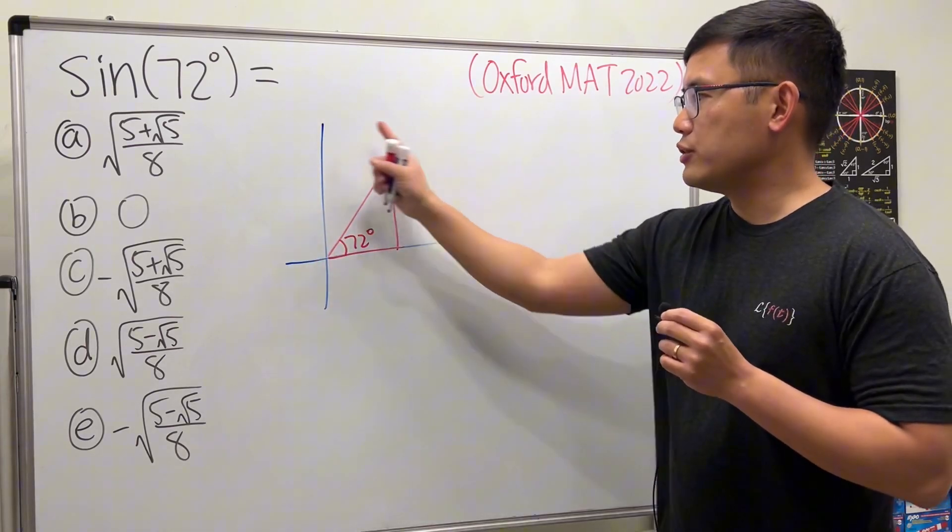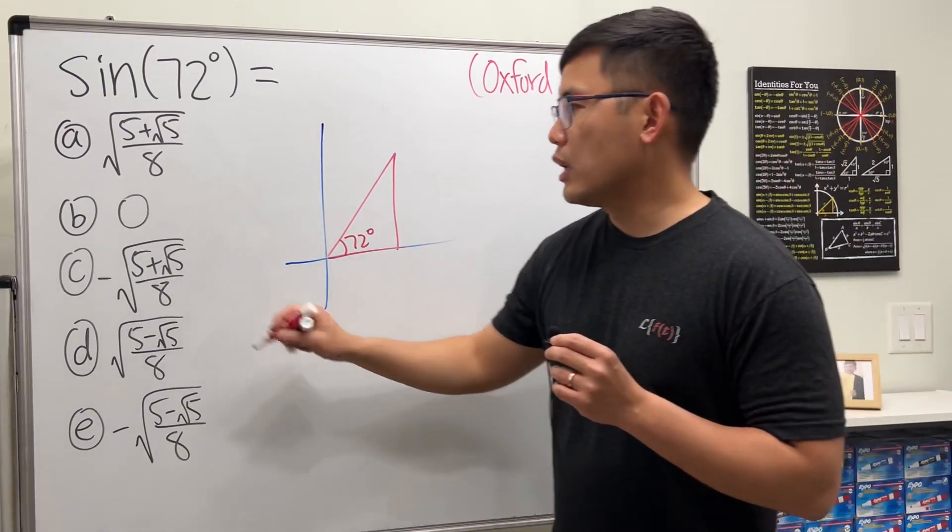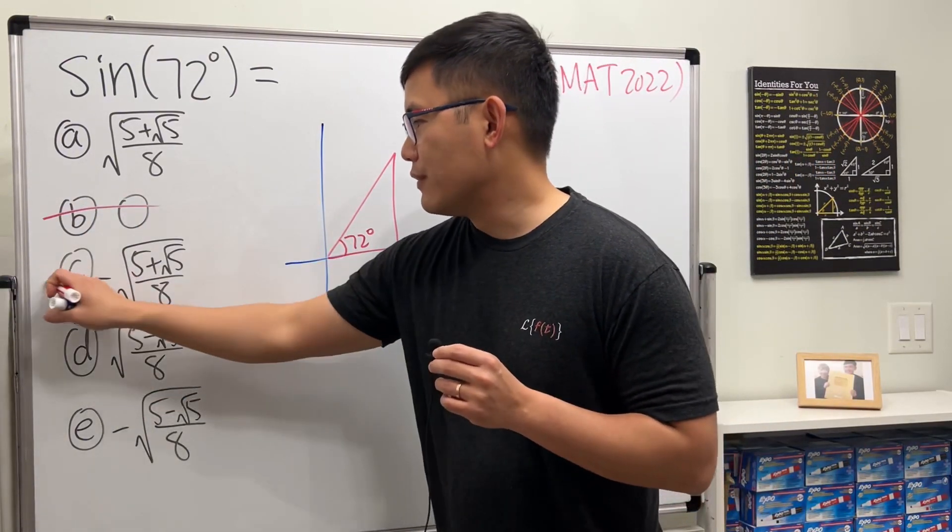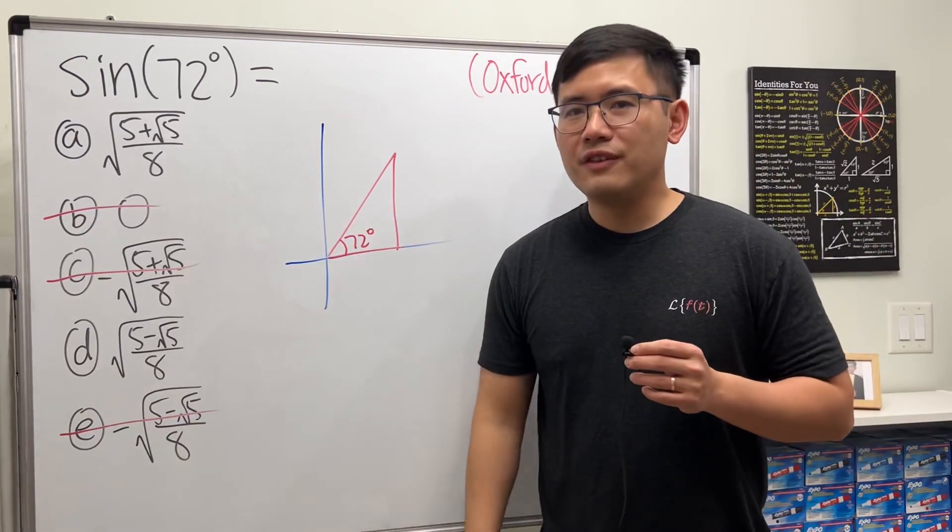You can look at a reference triangle here, and sine is going to be the y-value on the unit circle. So this right here is positive. That means we can get rid of zero, get rid of this, and get rid of that. Now it's just a 50-50 matter.